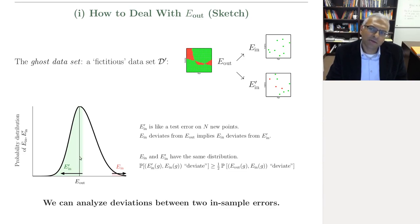In particular, roughly half of the time, you're going to see an E_in prime that's less than E_out. So in some sense, the probability that E_in is deviating from E_out by epsilon is approximately a half the probability that E_in deviates from E_in prime.